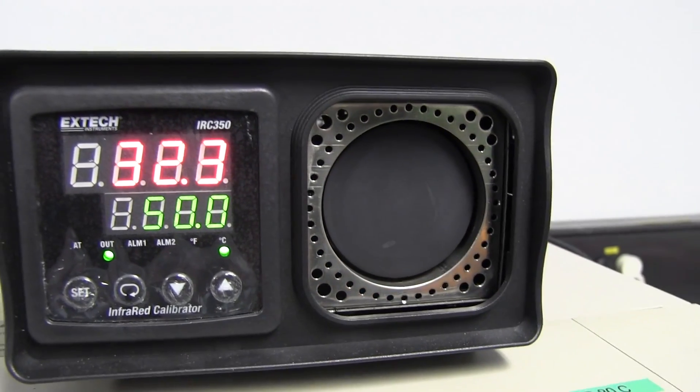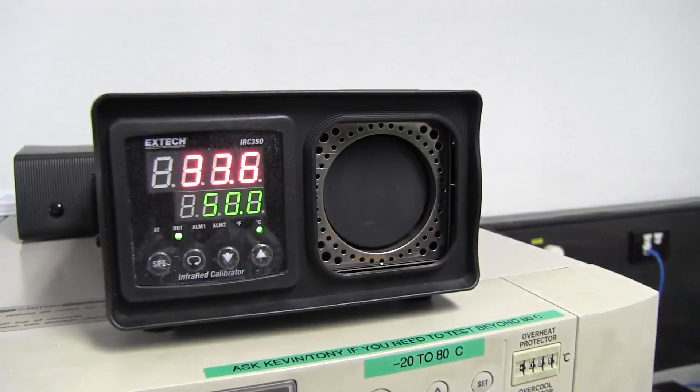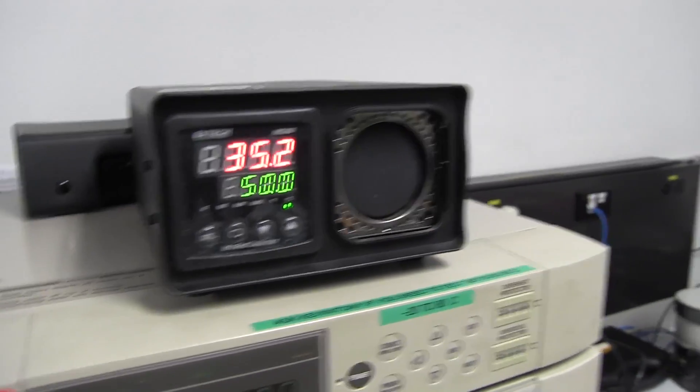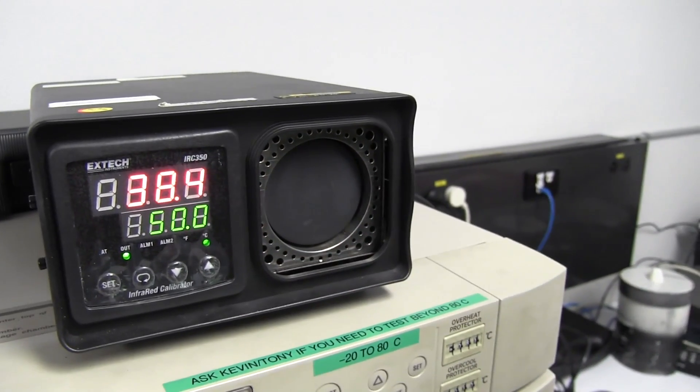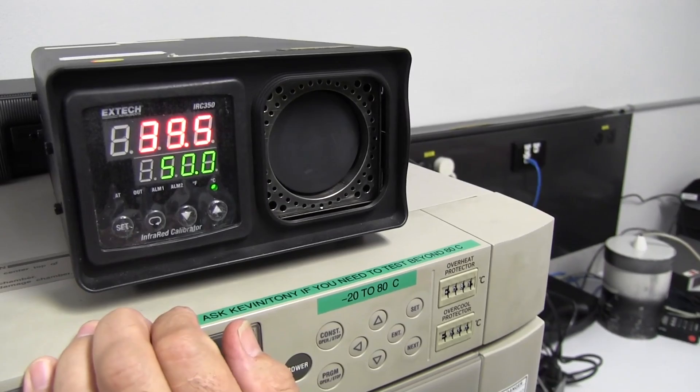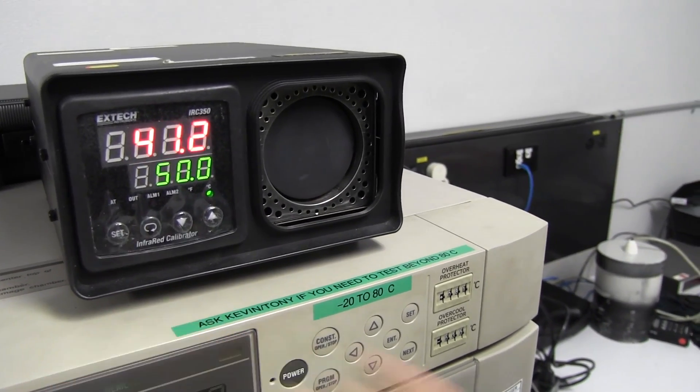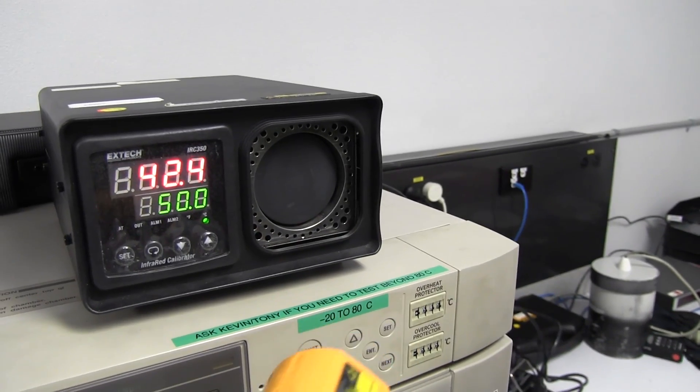While I'm here I thought I'd check it out and calibrate it. He's got one of these X-Tech IRC 350 black body radiation units. Can you tell us about it, Charles? You've got a very high emissivity area here, and this one's set at the moment to get to 50 degrees.